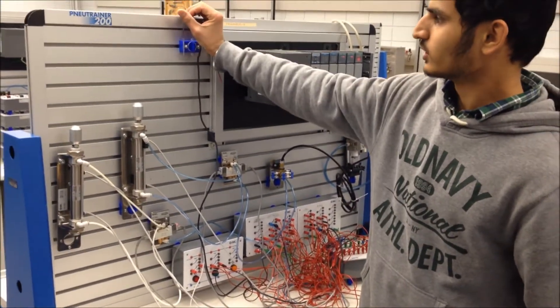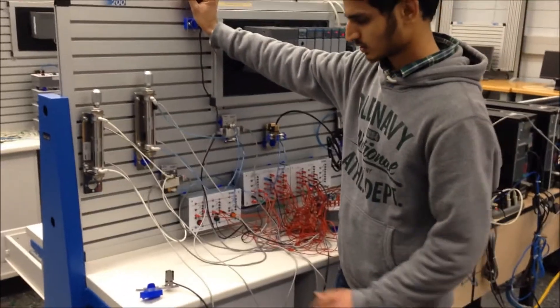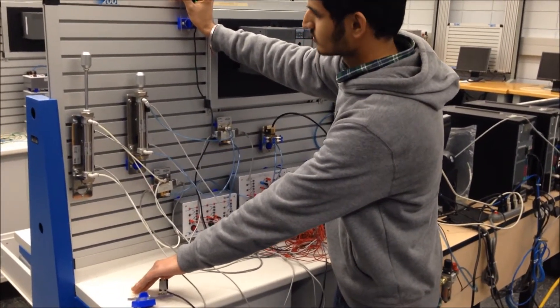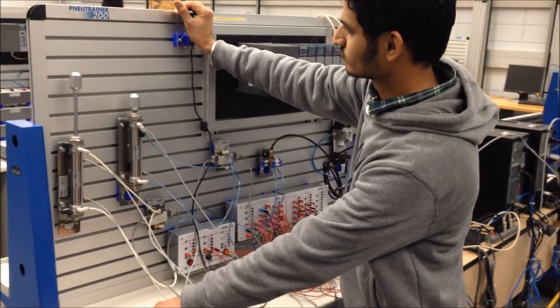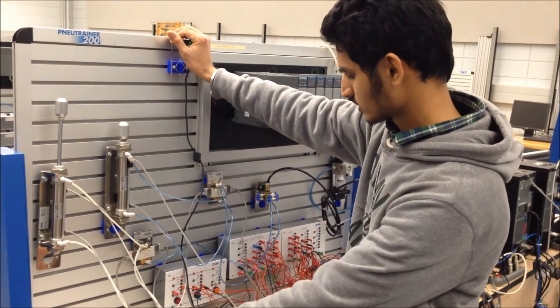It restricts the function of cylinder B. If I place my hand here instead, you can see that only cylinder A extends. This confirms that both photosensors are working.